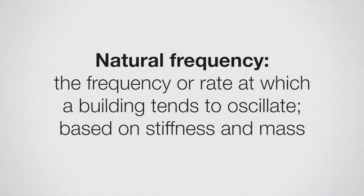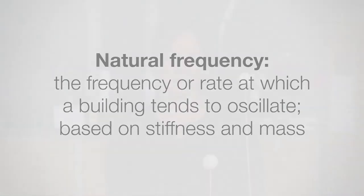So buildings, what this tells us is that buildings have a certain natural frequency at which they want to respond, and that's something engineers will calculate. They'll use the equation to figure out what they expect the natural frequency to be of the building. They'll know that shorter buildings tend to oscillate faster than taller ones, and then they'll try to relate that to earthquakes.